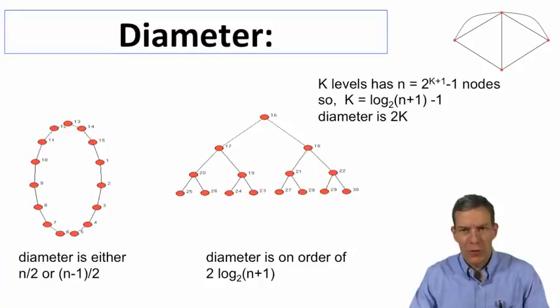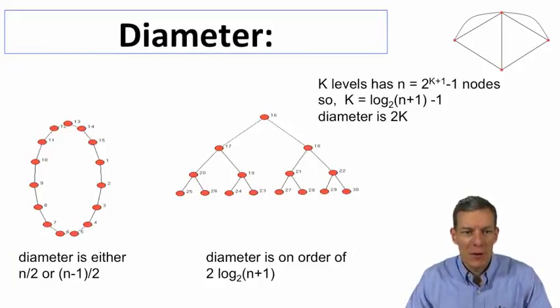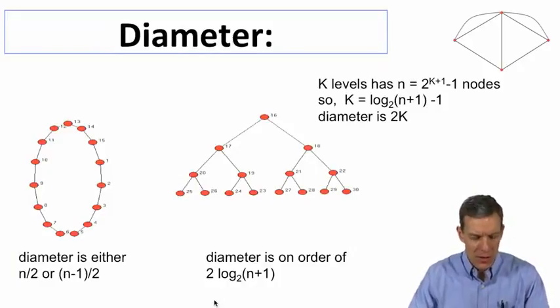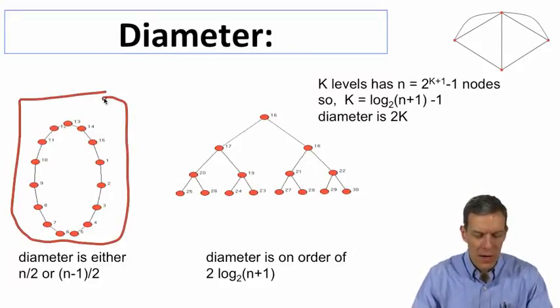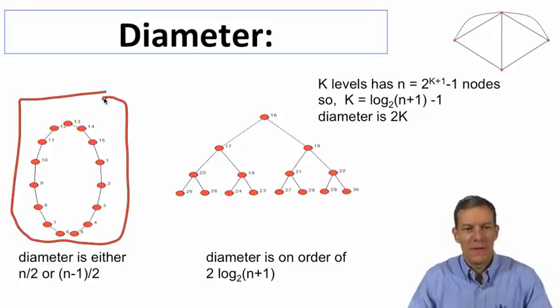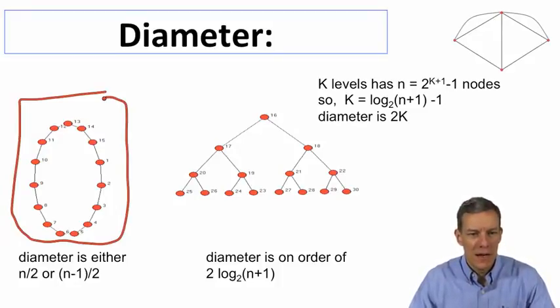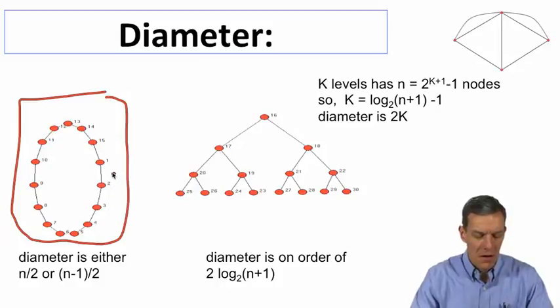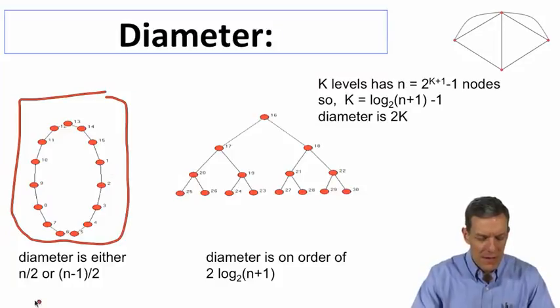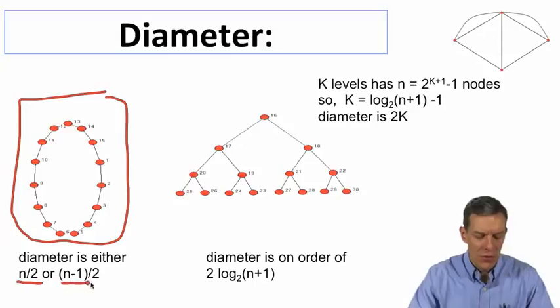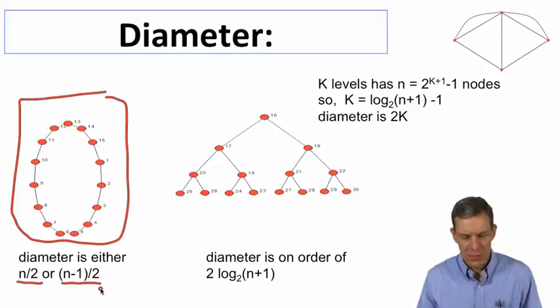And if we look at different network structures, diameter begins to tell us things about it. For instance, if we look here at the network on the left, we've got a ring or a circle of different nodes connected to each other. In that situation, some of them can be quite far from each other, and the diameter in this case is on the order of half the number of nodes, so either n over 2 or (n-1) over 2, depending on whether we've got an even or odd number of nodes.